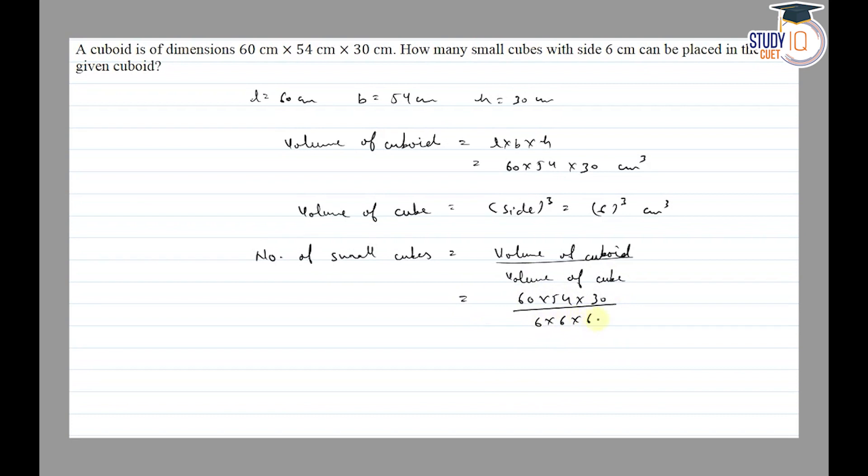Canceling the sixes: 6 fives are 30, 6 tens are 60, 6 nines are 54. So we get 450. Therefore, 450 small cubes with side 6 can be placed in the given cuboid. Thank you.